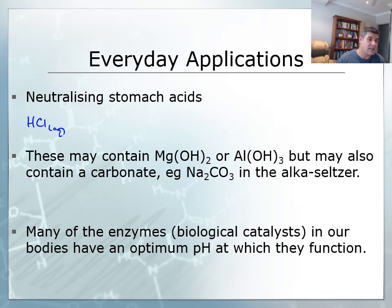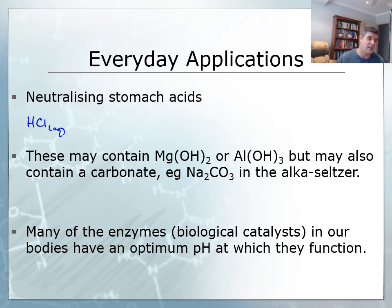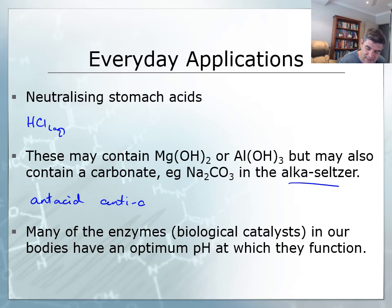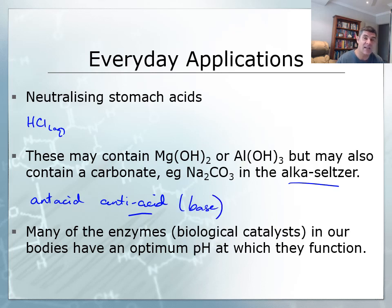The problem is that sometimes this acid can build up or be secreted at the wrong time, or because of the sorts of foods we're consuming, these acid levels can get very high. If we're going to control, regulate, or address that concern, we need some sort of substance that's going to neutralize it. That's why we will often take something known as an antacid — think of it as an anti-acid — something that's going to counteract the effect of an acid. An antacid is a base, and when the base reacts with the acid, it neutralizes it to form water.